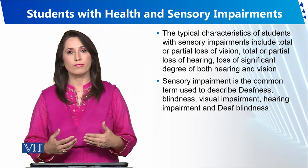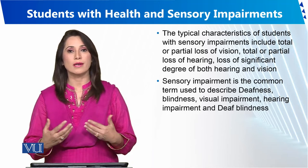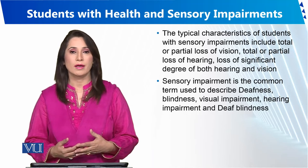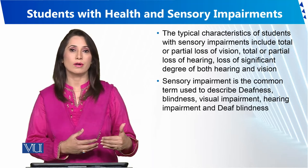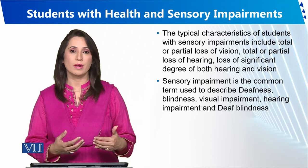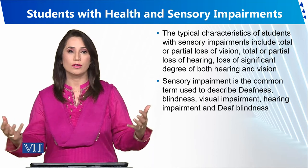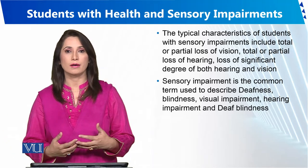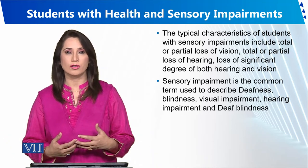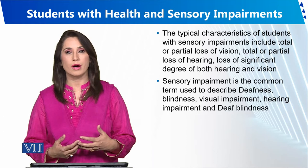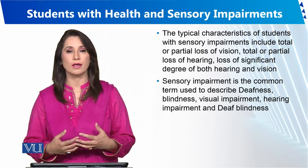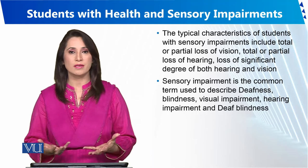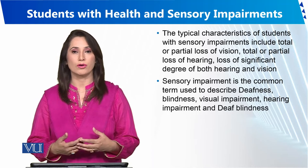If we know about the level or degree of the impairment, then according to the degree, level, or extent of the impairment, the teacher can make an instructional plan. Also, the psychologist and educationist can make a plan accordingly, and parents can make a plan accordingly.